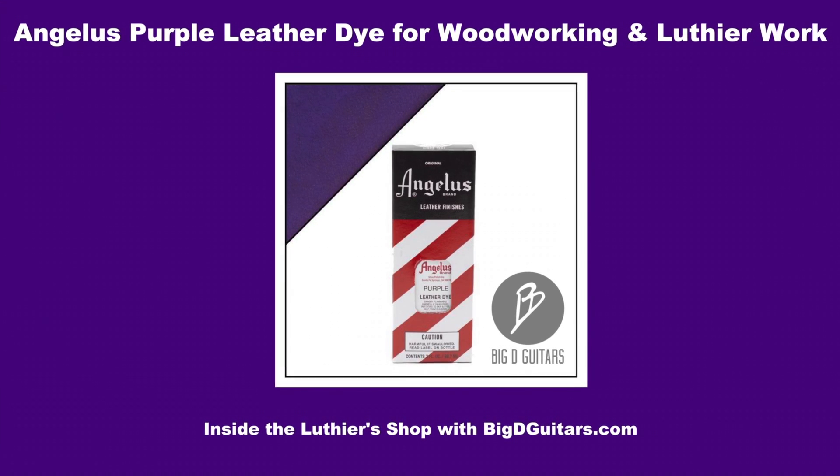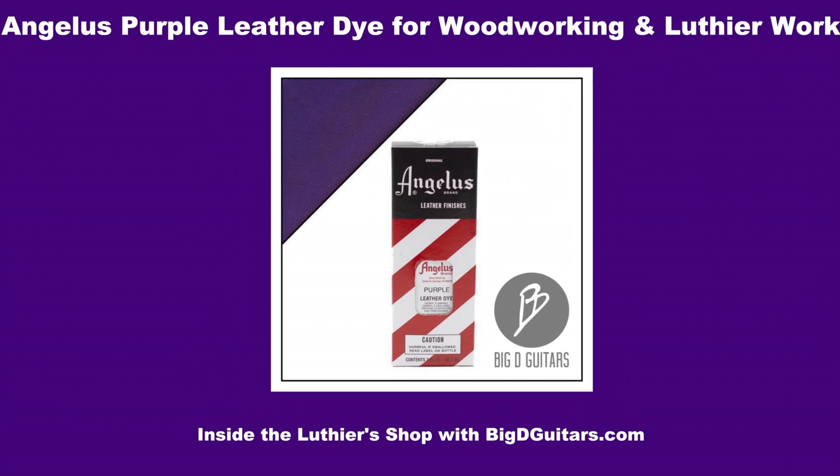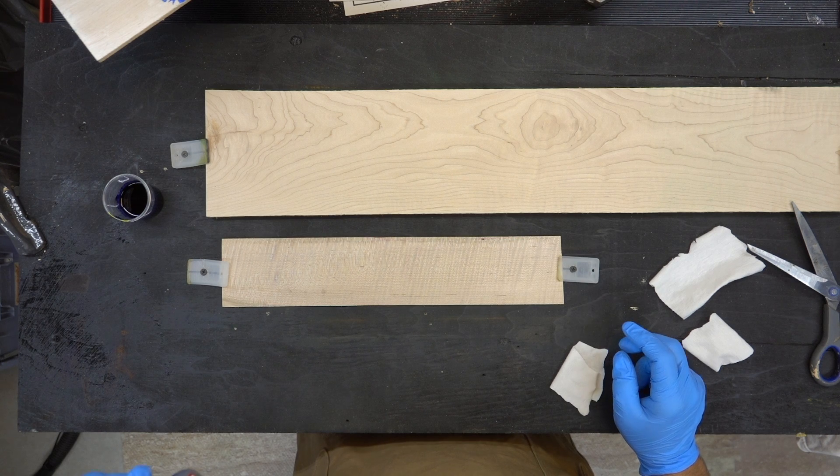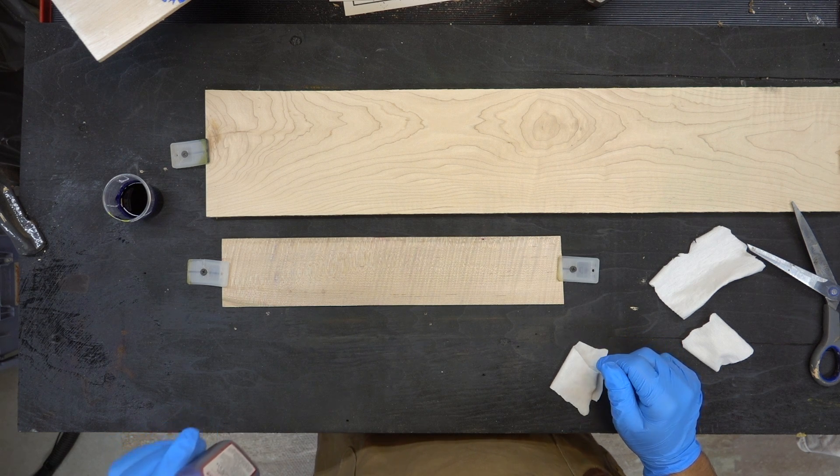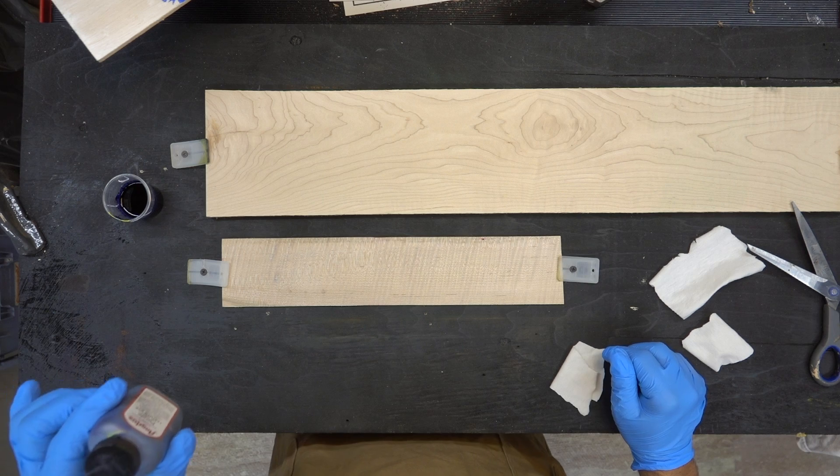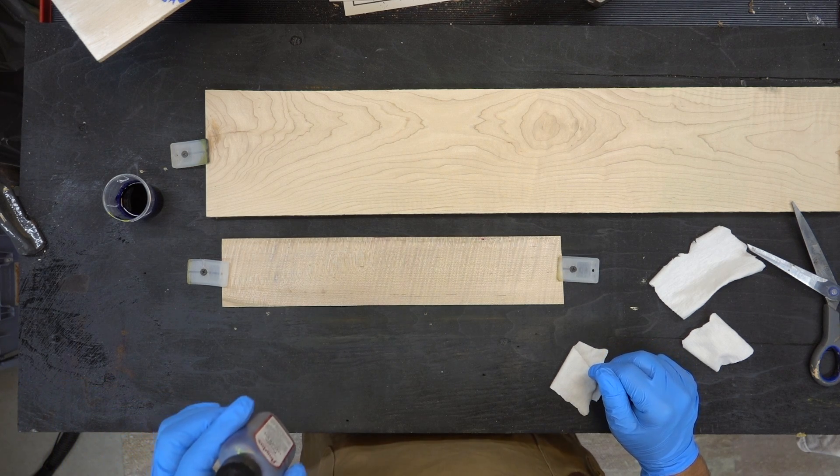Alright, next up we're going to do some Angelus Purple Dye. This is one of my favorite colors, but it's also a little bit tricky. The purple, if you put it on too much, turns a little bit brown. So there's a couple tricks you can do if you want full strength color versus diluted.